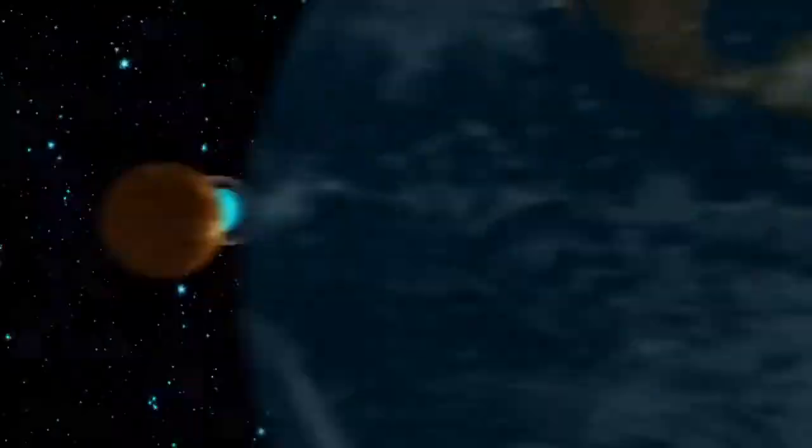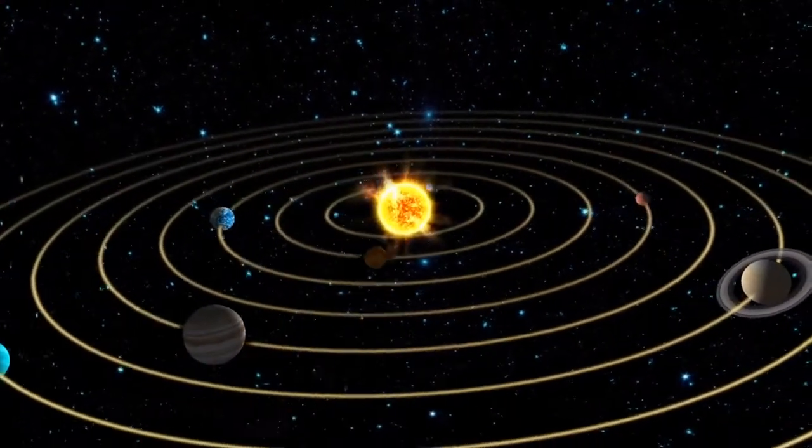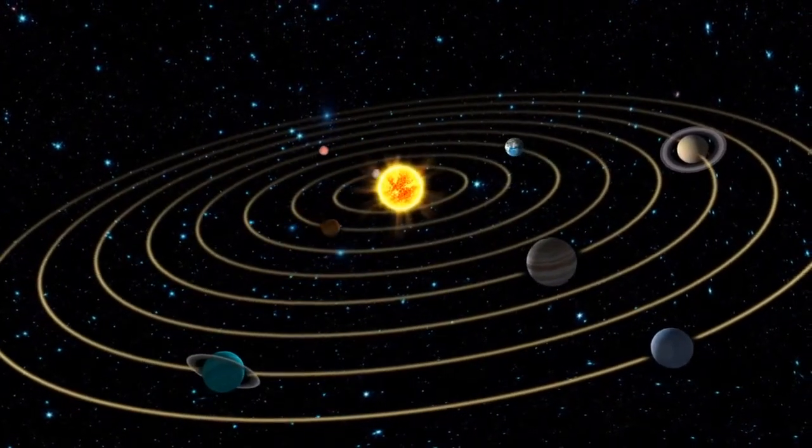Here's a cool fact! The planets in the solar system rotate about their axis at different speeds. This means the length of a day on each planet is different.